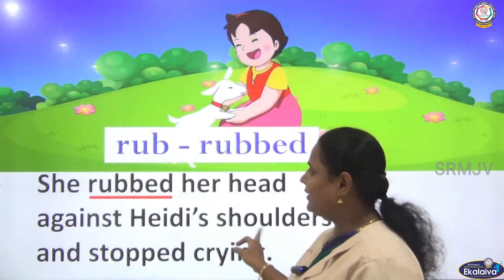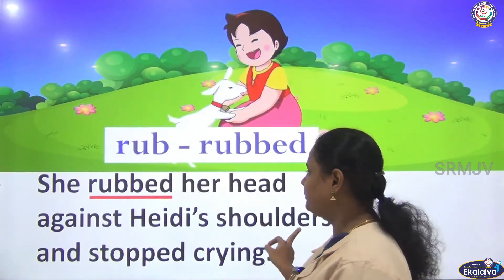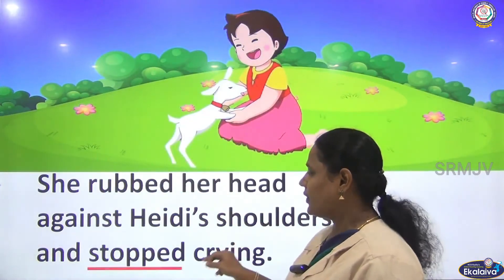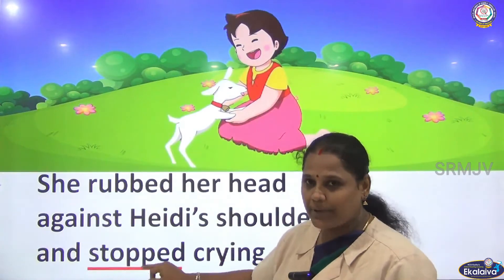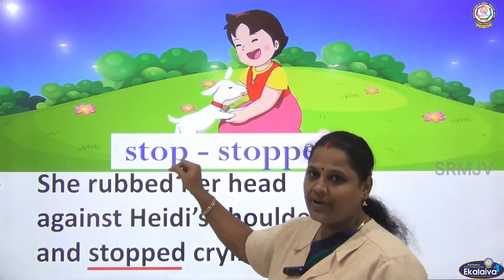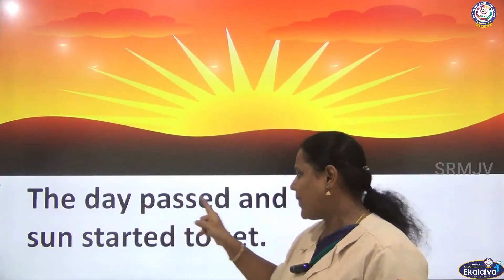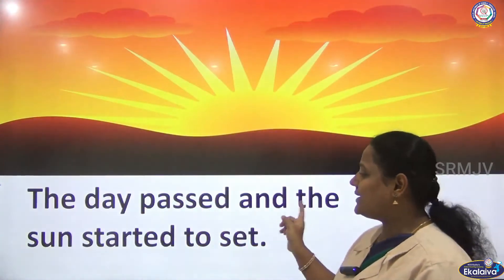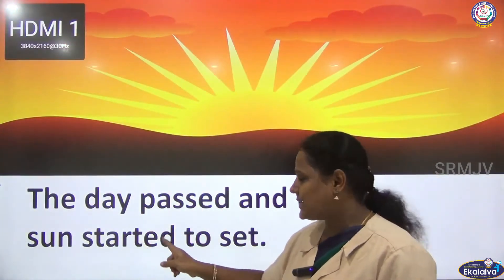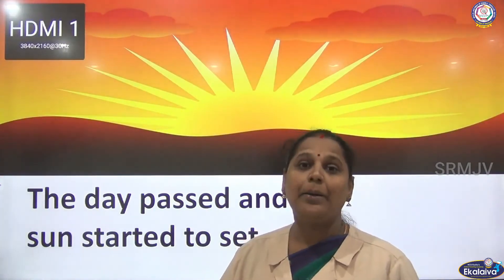'Rubbed' is the past tense of 'rub'. 'Stopped' is the past tense of 'stop'. The day passed and the sun started to set — the day ended and the sun began to set.